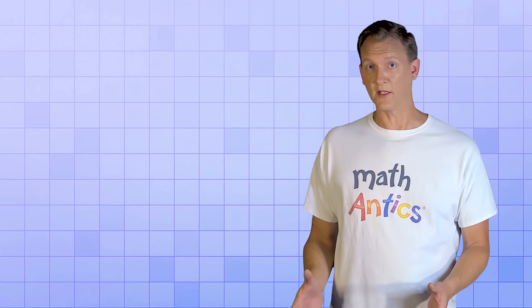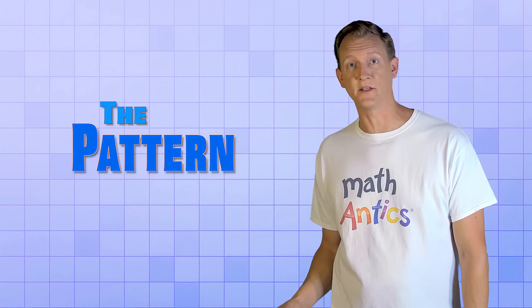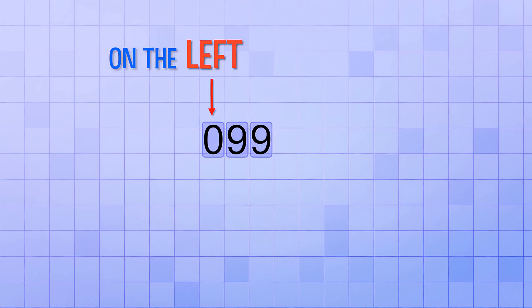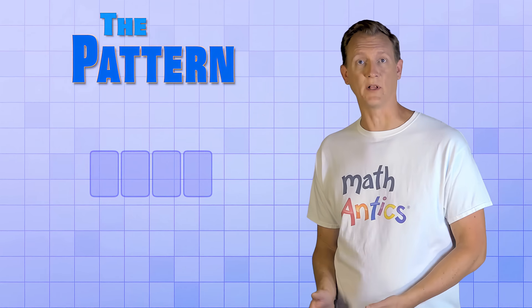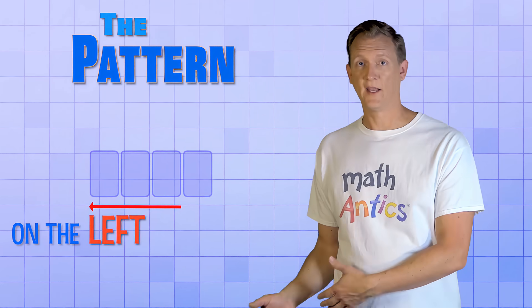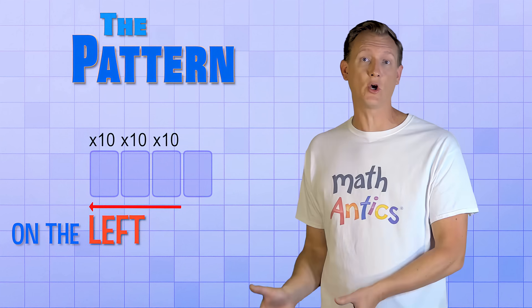To see how the base 10 system is extended with decimal places, let's look at the pattern of number places that we saw in the last video. We started out with a number place for counting things one at a time, and when we hit the limit of counting with it, we used another number place on the left side of it for counting groups of 10. By combining those two number places, we could count from 0 all the way up to 99, but when we needed to count beyond that, we used another number place on the left for counting groups of 100. And when those places were maxed out, we added a place for counting by groups of 1,000, and then by groups of 10,000, and so on. See the pattern? Each time we added a new number place, it was located to the left of the previous one, and each time it represented groups that were 10 times larger than the previous group.